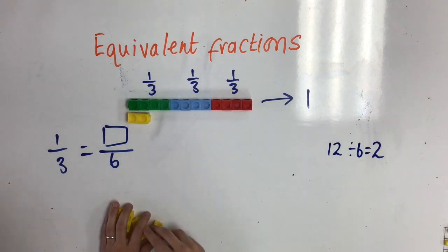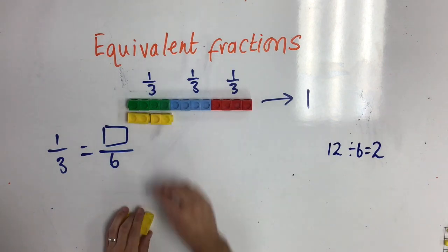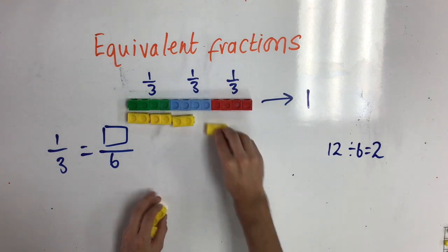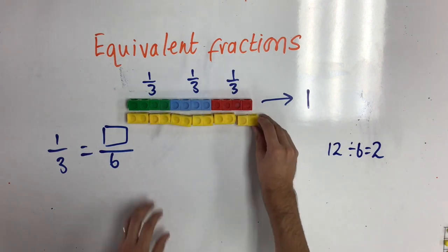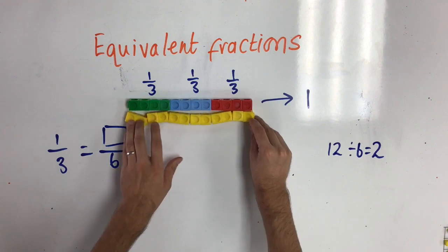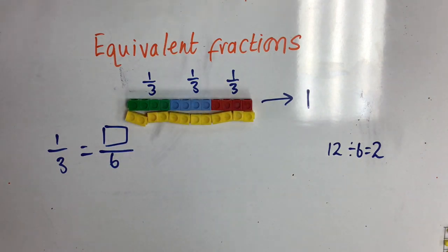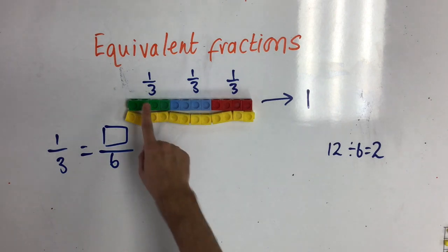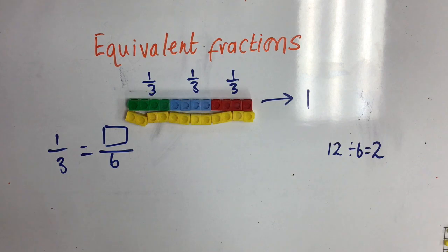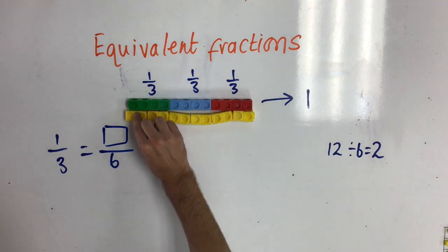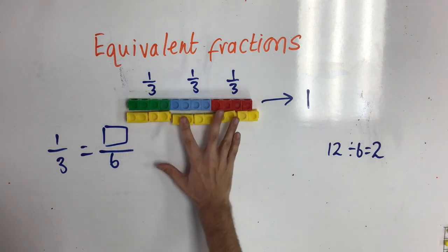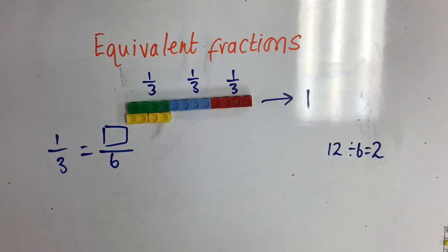I can check that by making sure the two blocks takes up the same amount of space, which it does. I now need to work out how many sixths are equivalent to one third. Because I've got each third in a different colour, I can see very easily. So, I can see that two sixths is the same.